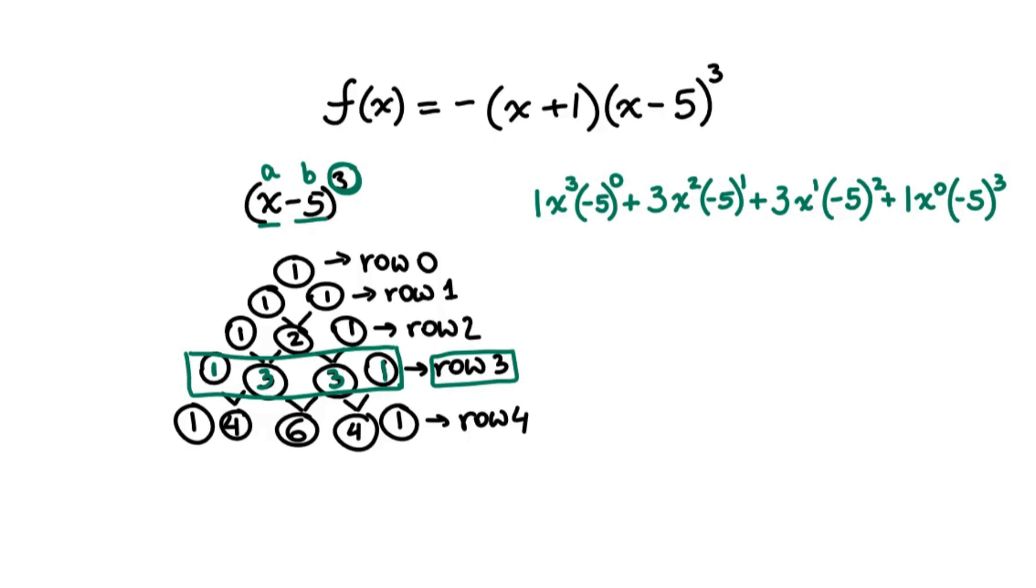When we have a coefficient of 1, we're not writing it. When we have a number raised to the power of 0, when you have a base other than 0 raised to the power of 0, it could be a variable, it could be a number, it's equal to 1. So negative 5 to the power of 0 is equal to 1, and x to the power of 0 is also equal to 1. We have it further down the expression. So then the first term simplifies to just x cubed.